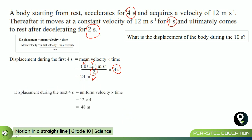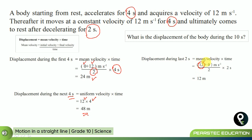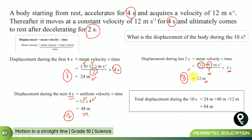In the second phase — the next 4 seconds — it moves at uniform velocity of 12 meters per second, so displacement equals 12 multiplied by 4, which is 48 meters. For the last 2 seconds, the initial velocity is 12 and the final is 0, so: 12 plus 0 divided by 2, multiplied by 2 seconds, equals 12 meters. Total displacement in 10 seconds: 24 plus 48 plus 12 equals 84 meters.